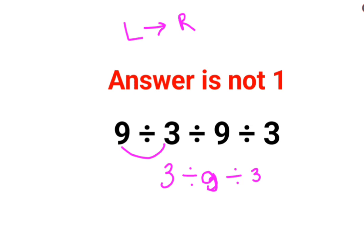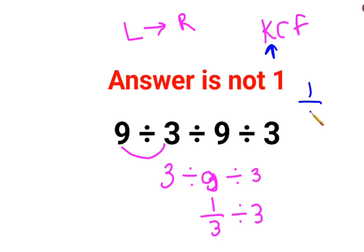Now at this point, 3 divided by 9 is 1/3, divided by 3. When you do this, you have to realize that whenever there is a fraction, you follow the rule of KCF: K stands for keeping the first number as it is, which is 1/3; C stands for changing the division sign to multiplication; F stands for flipping, or taking the reciprocal of the next number, which is just 3 — so the reciprocal will be 1/3.